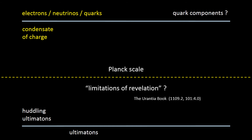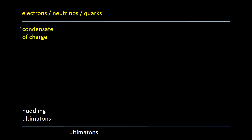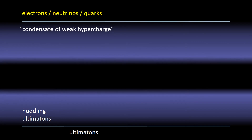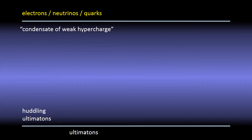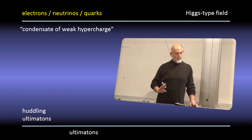Now about this condensate of charge. This charge is called weak hypercharge, and this condensate is thought to fill all space — this is the famous Higgs-type field. Since the 1970s, our standard model for particle physics has assumed that this kind of condensate exists, and in 2012 scientists claimed to have proven that it does. 'Condensate of weak hypercharge' is a mouthful, so Professor Leonard Susskind likes to call this stuff zilch.